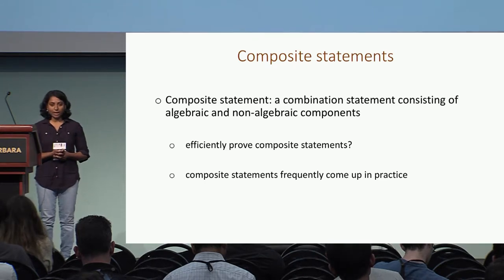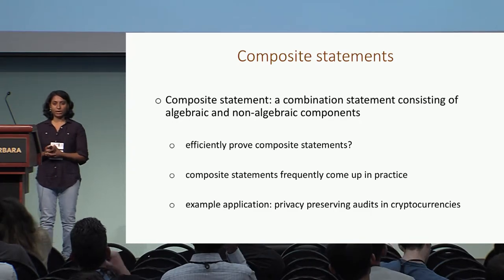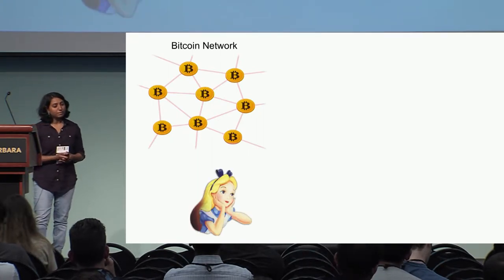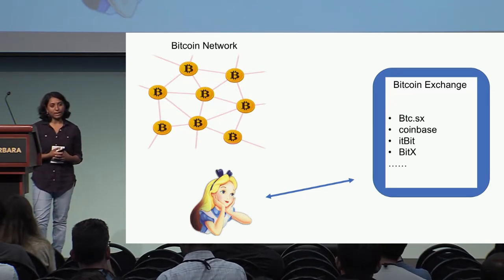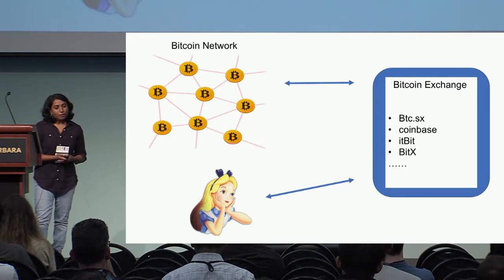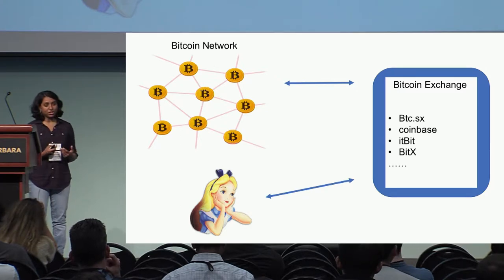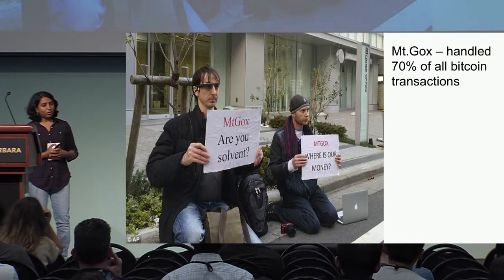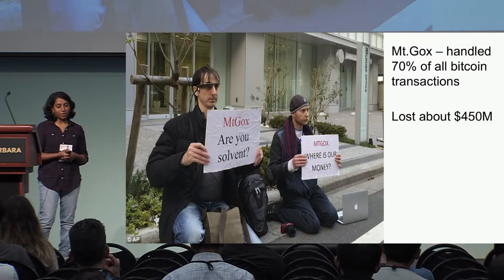Such statements frequently arise in practice. For the purposes of this talk, we look at privacy-preserving audits in cryptocurrencies as a motivating application. We have the Bitcoin network, and most Bitcoin users prefer to store their assets on an exchange like Coinbase, which provides services like online banking with account management. While this is convenient, it leaves users vulnerable to loss of their assets if the exchange loses Bitcoins due to fault or fraud. Famously, Mt. Gox, which was one of the largest exchanges a few years ago and handled about 70% of all Bitcoin transactions, filed for bankruptcy after losing $450 million in client money.